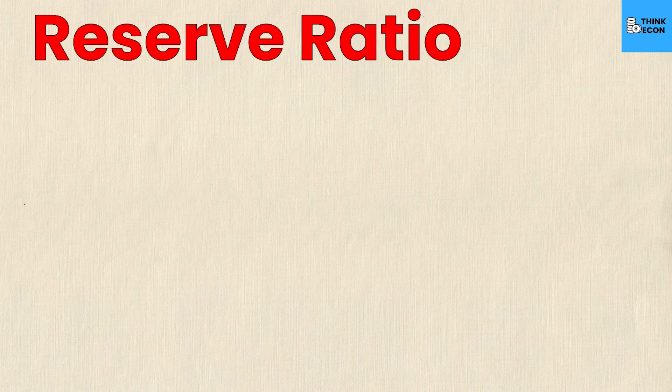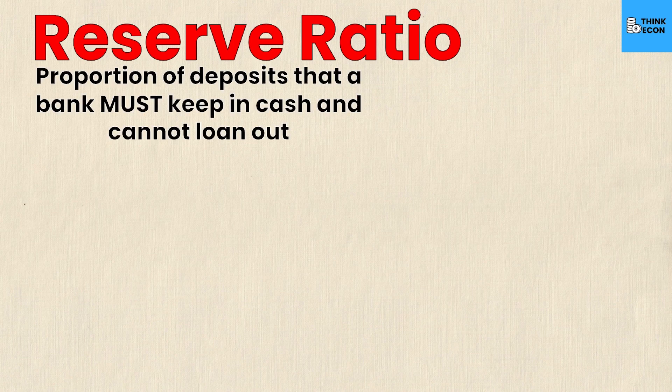The first term we're going to look at is called the reserve ratio. The reserve ratio isn't too complicated on its own, but more complicated is how it's used to create money seemingly out of thin air. The reserve ratio is the proportion of deposits that a bank must keep in cash and cannot loan out — think of it as the money kept in a safe in the back rather than put back into the economy.